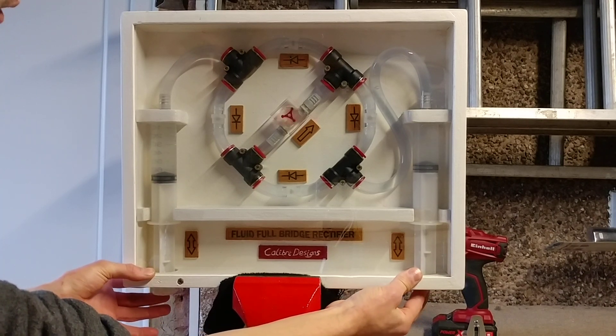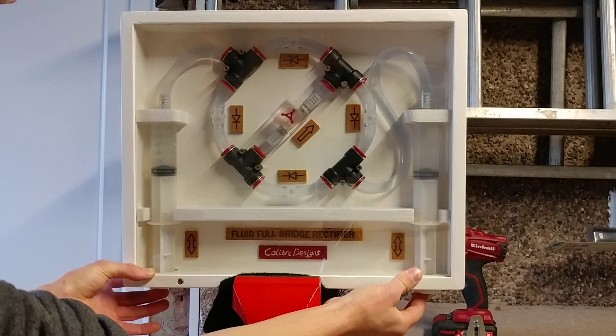You can kind of see if I move it slowly that the flow meter is only spinning anti-clockwise.